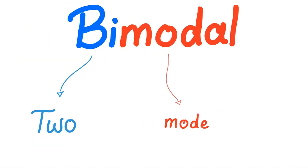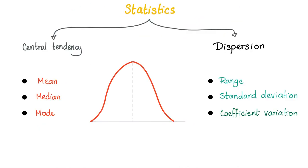Bi is two, and modal comes from mode. In statistics, we have two main concepts: central tendency and dispersion. To measure central tendency, we use three measurements: the mean, the median, and the mode — which is today's topic. To measure dispersion, we use the range, the standard deviation, and the coefficient of variation.